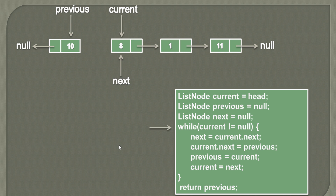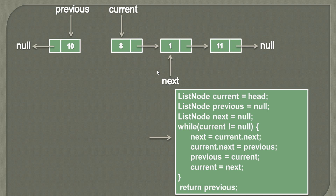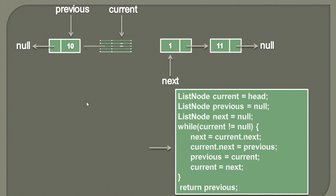We again execute the while loop and check whether current equals null. Current points to the second node, which is not null, so the loop executes. We perform the same steps: assign current.next to next — so next now points to the third node. Then to current.next we assign the value in previous. Since previous points to the first node, current.next now points to the first node. Moving ahead, to previous we assign the value of current.